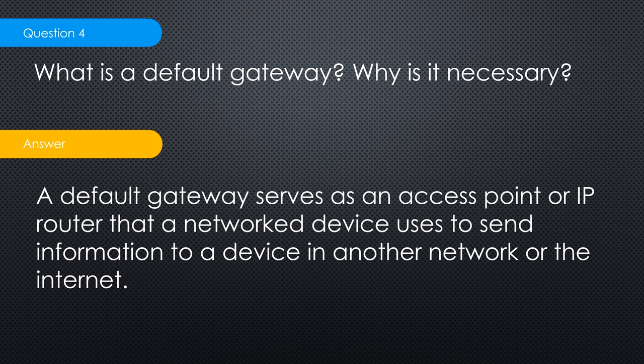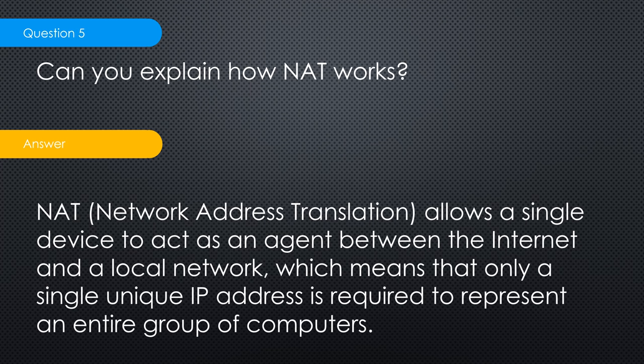Fifth question: can you explain how NAT works? Network Address Translation essentially saved the internet. When the internet began, they thought four billion IP addresses would be more than enough. Like today's IPv6, all those addresses were public routable IPs. But if each computer needed its own public IP address to communicate on the internet, we would have run out very quickly.